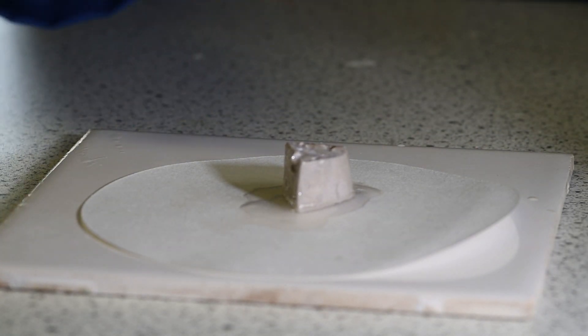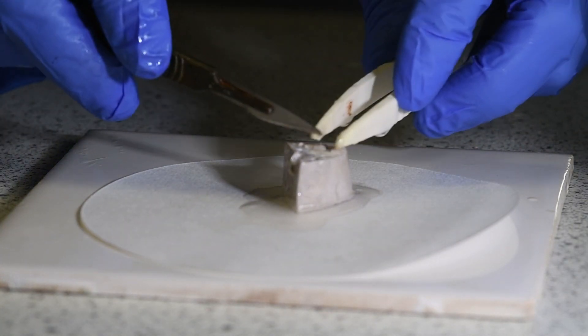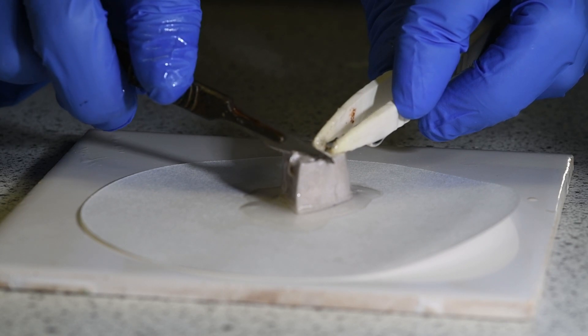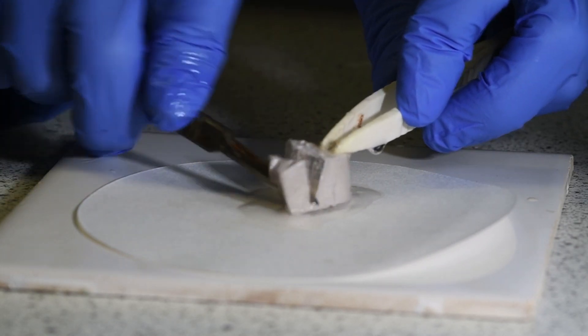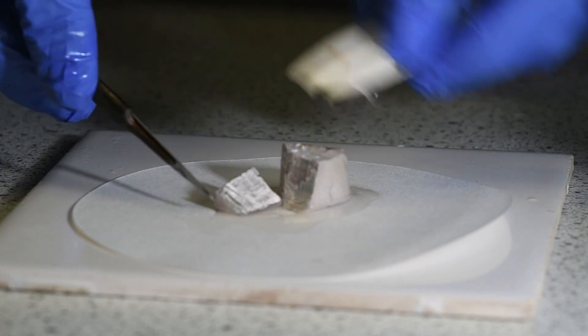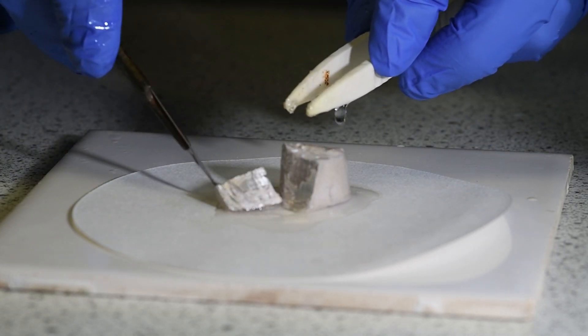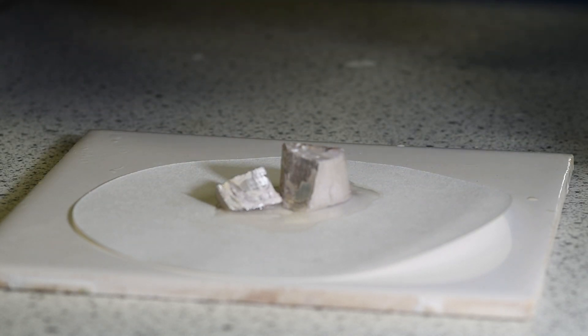You can see that sodium's a much paler color than the lithium. And if I cut, it's still quite soft. And you'll see the cut surface there shiny, but it tarnishes really very quickly.